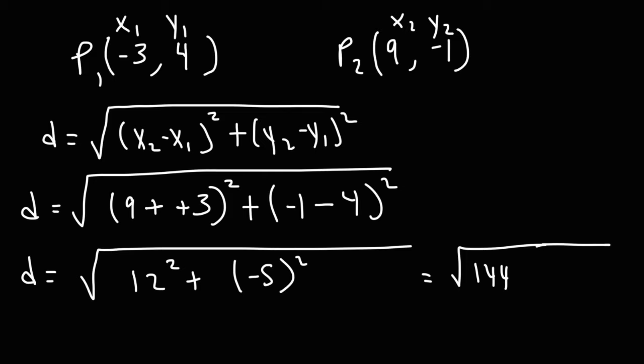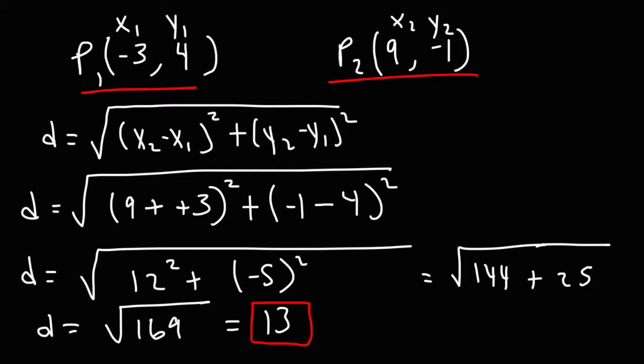Negative 5 squared, that's negative 5 times negative 5, which is positive 25. And then 144 plus 25 is 169. And the square root of 169 is 13. So this is the distance between these two points. So now you know how to find the distance between two points using the distance formula.